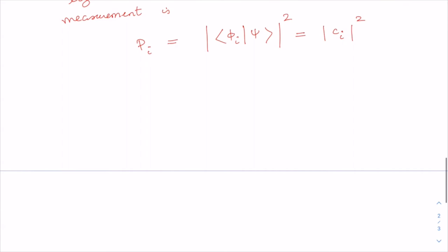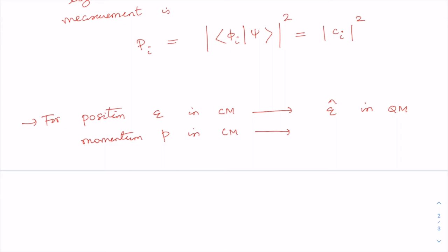Another important postulate of quantum mechanics states that for every physically observable quantity in classical mechanics, there is a corresponding operator in quantum mechanics. For example, for position q in classical mechanics, we have the position operator q̂; for momentum p, we have the momentum operator p̂, which in coordinate representation is −iℏ(∂/∂q); and for energy, we have the Hamiltonian operator Ĥ.